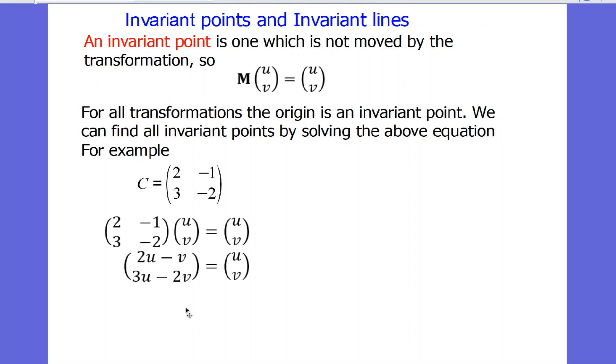So we get 2u minus v and 3u minus 2v. Now we've got a pair of simultaneous equations to solve. 2u minus v is u from the top equation, and 3u minus 2v is v. Let's simplify each of these equations: one is u equals v, the other is 3u equals 3v. Since these two equations are identical, we do actually have a solution.